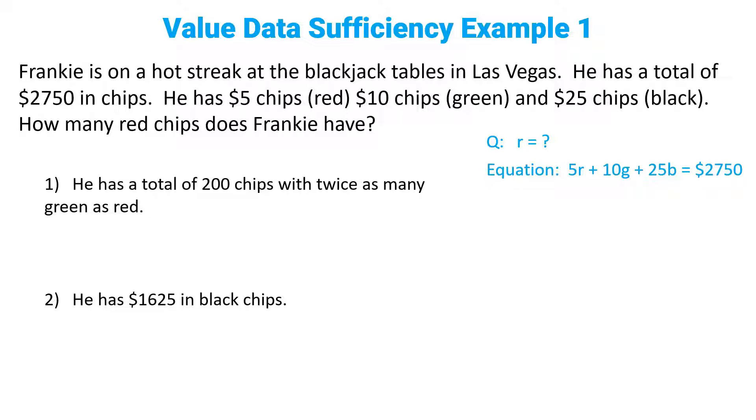In this case, we're told that 5 times r, plus 10 times g, plus 25 times b, equals 2750. Okay, that means we have been given one equation, but we've been given three variables.